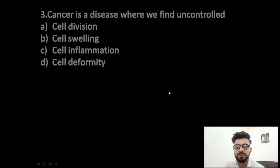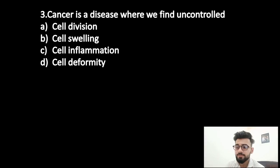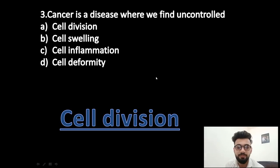Question 3: Cancer is a disease where we find uncontrolled what? Cell division, cell swelling, cell inflammation, or cell deformity? The answer is cell division. In cancer, cells divide very easily and very fast, and mitosis happens rapidly in the body.